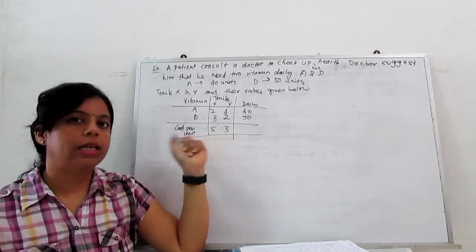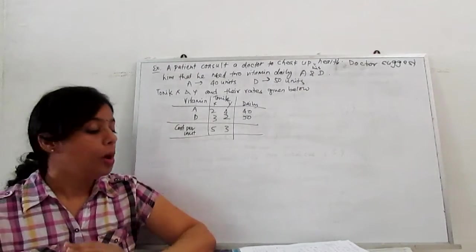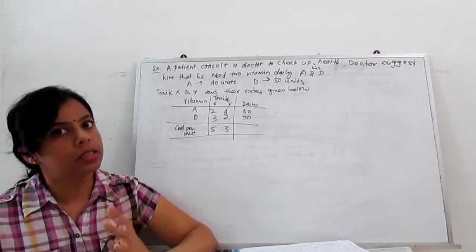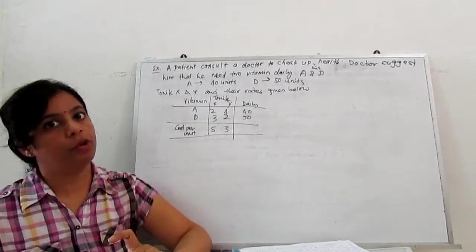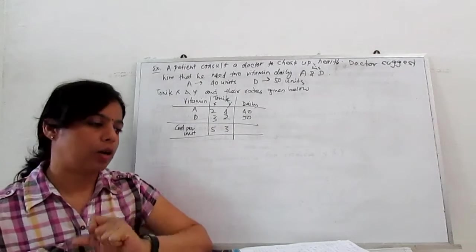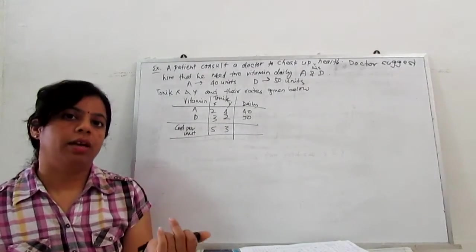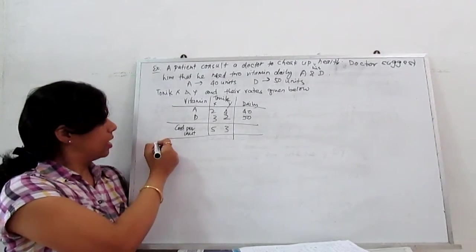Cost per unit of tonic X is $5, tonic Y is $3. Now the person wants to minimize the cost of that tonic. Which tonic should he buy, how many bottles so his requirement is fulfilled, and he minimizes the cost?